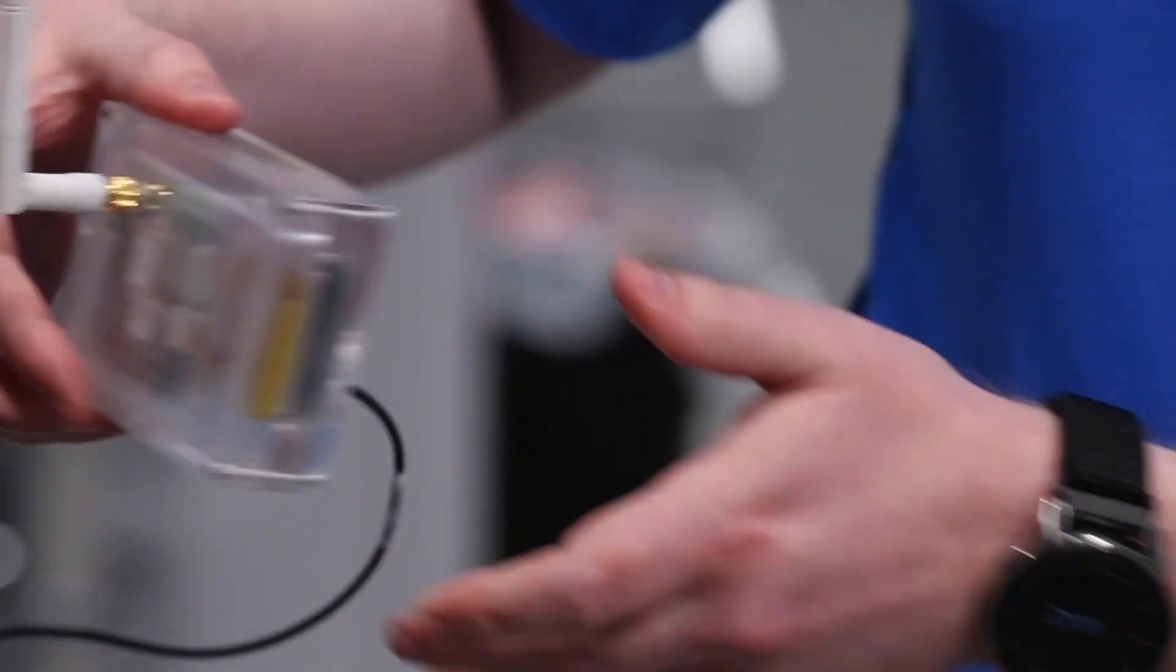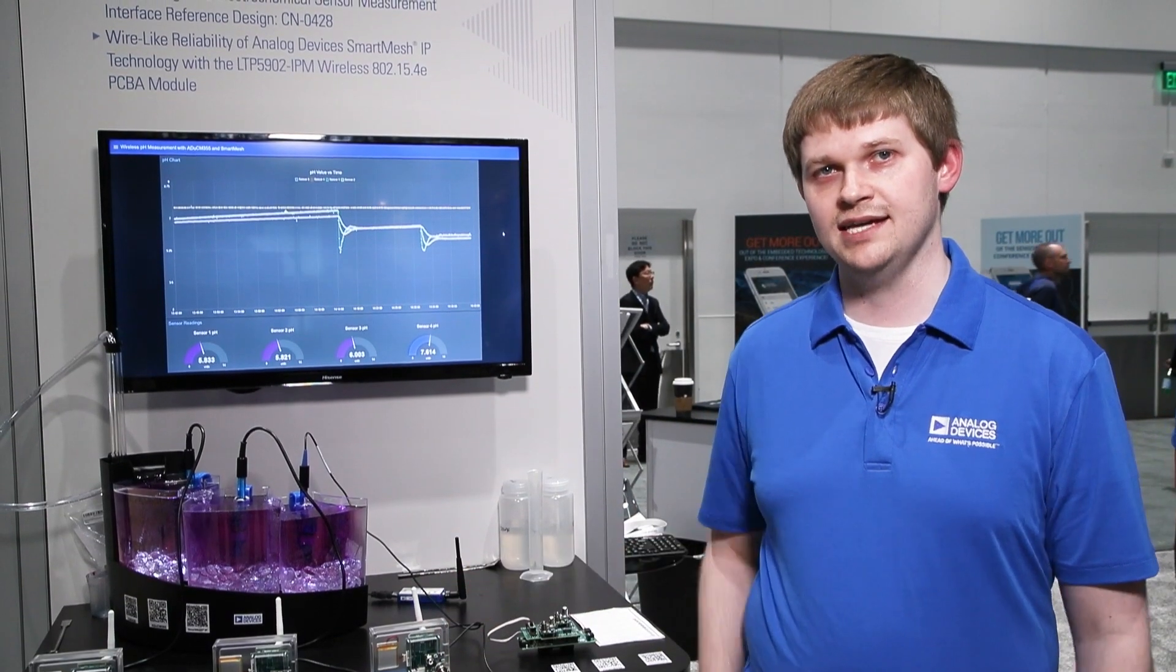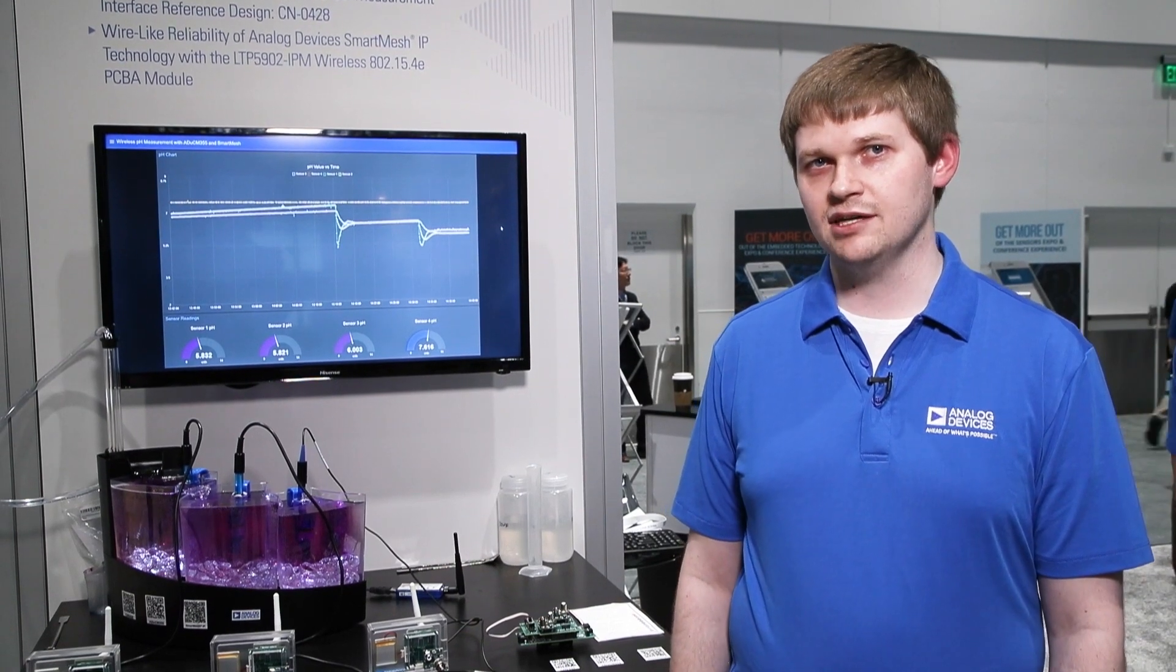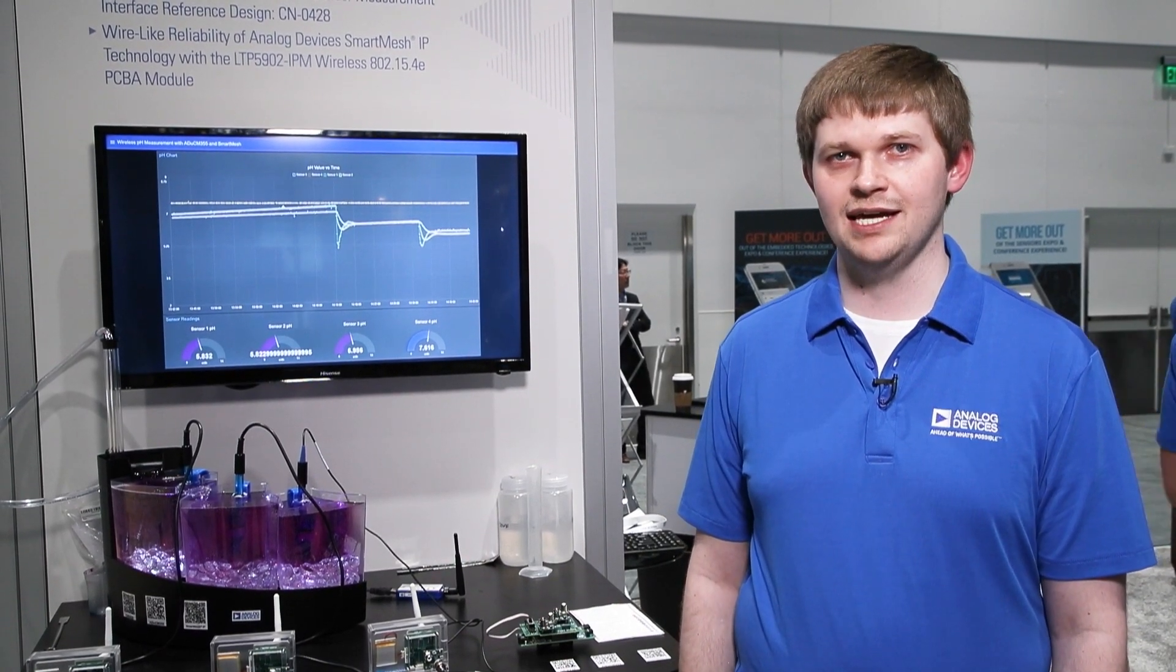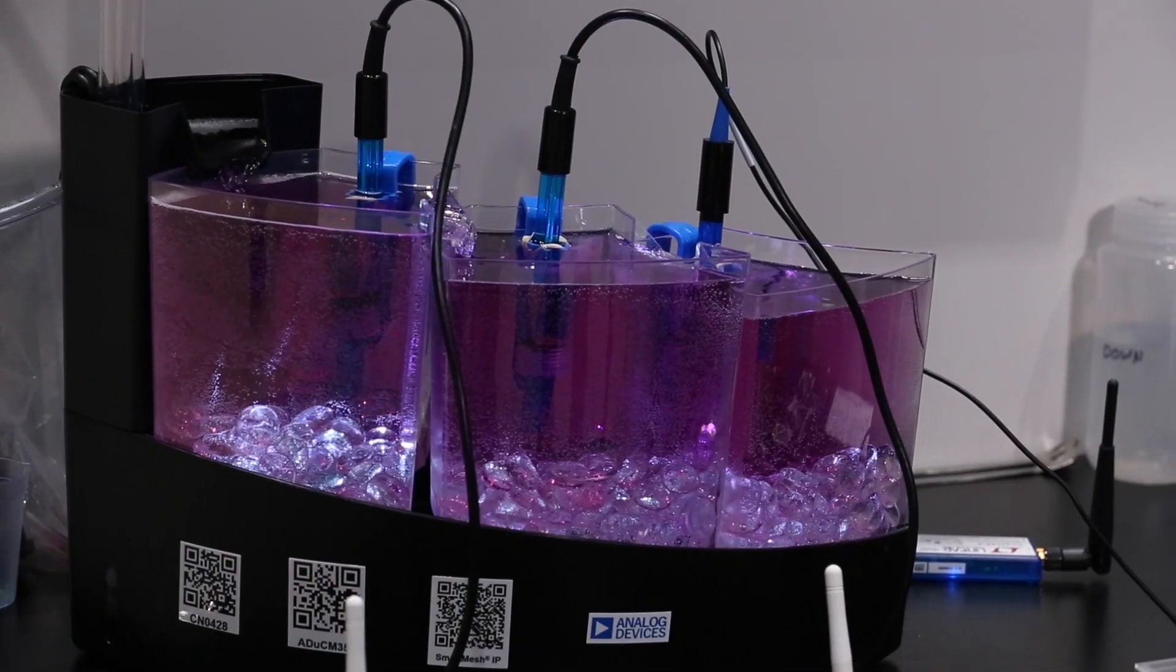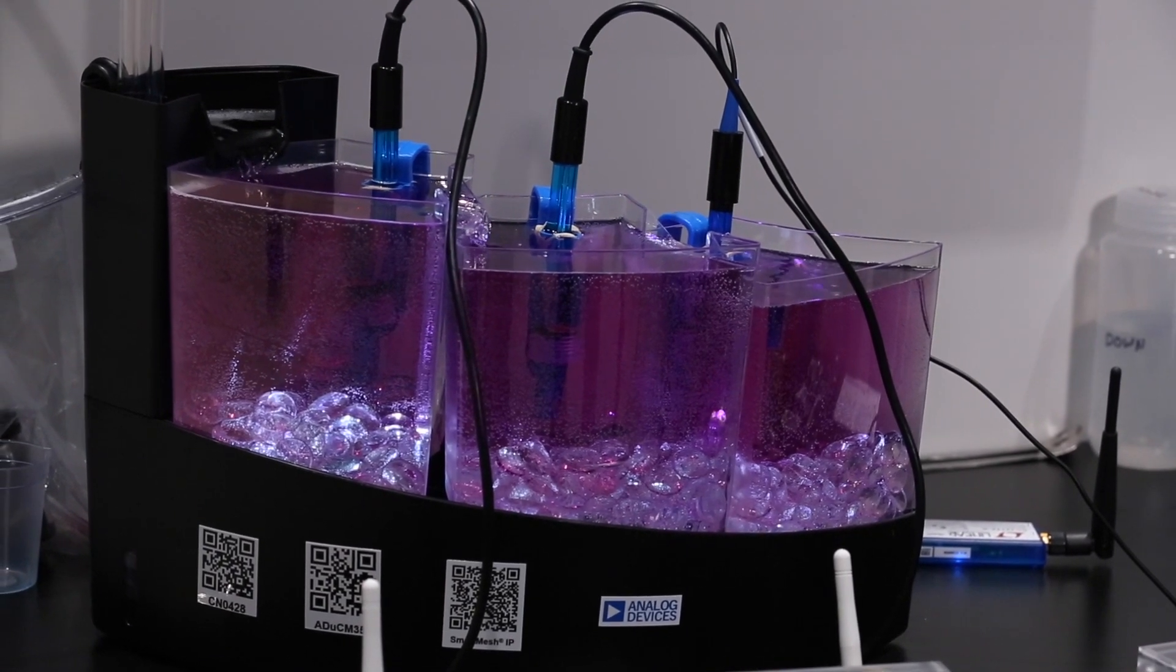So we have multiple of these sensor nodes measuring water quality in a tank and I'm going to show you how as we change the pH of the solution here and the colors change accordingly, we can see the changes on the sensors.